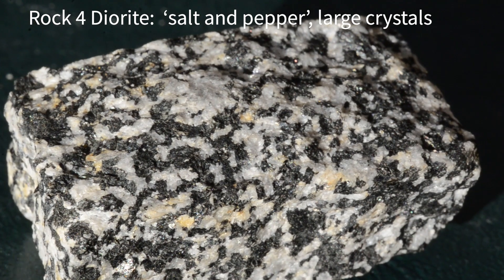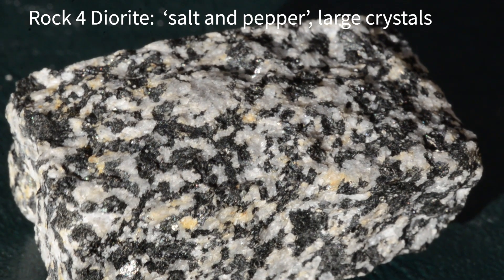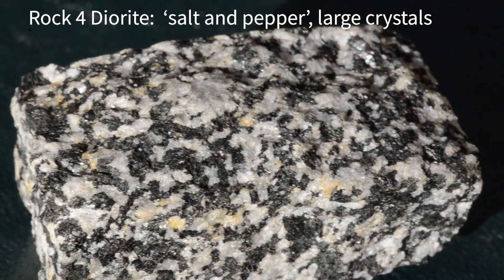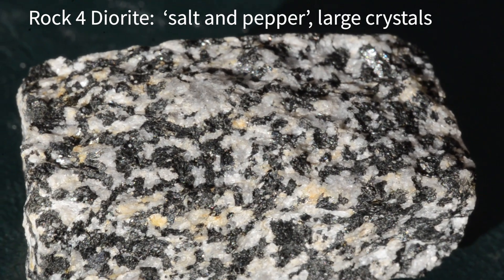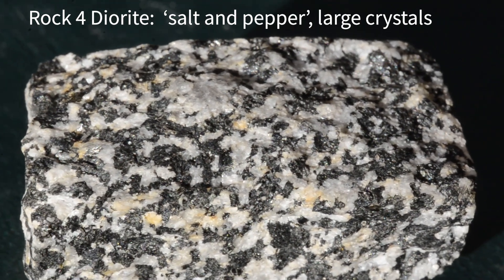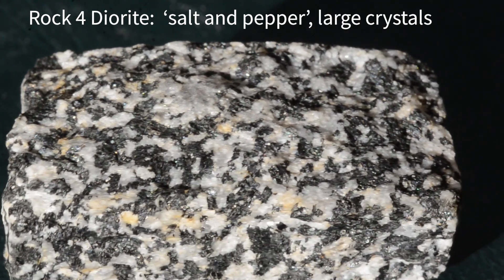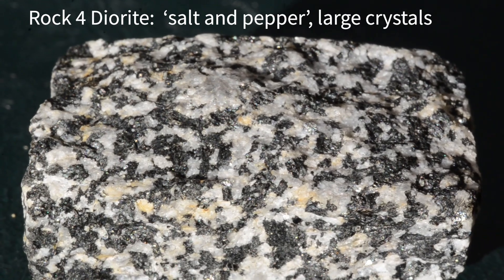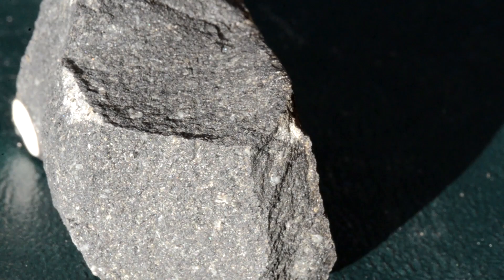This one is diorite. It's also an intrusive rock. You can see very large crystals in black and white color. That's why we call it salt and pepper — that's a very common identification factor for this rock.